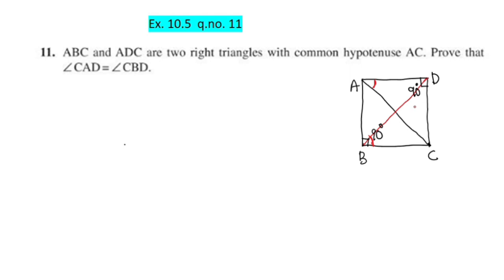Quadrilateral ABCD lies on a circle — this is a cyclic quadrilateral. For a cyclic quadrilateral, each pair of opposite angles sums to 180 degrees.